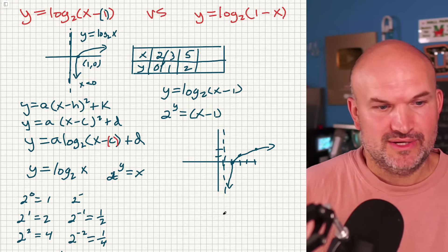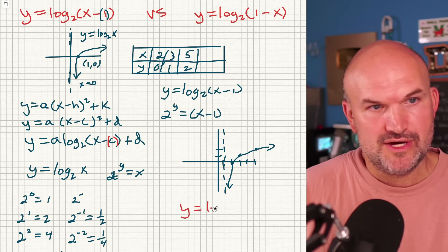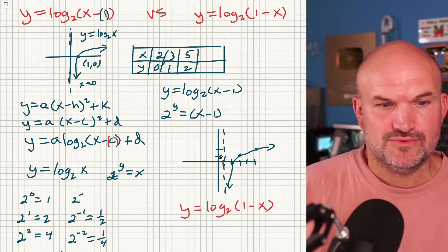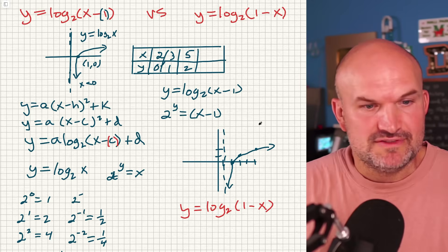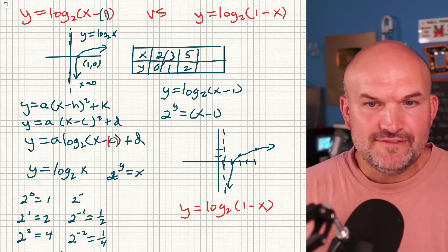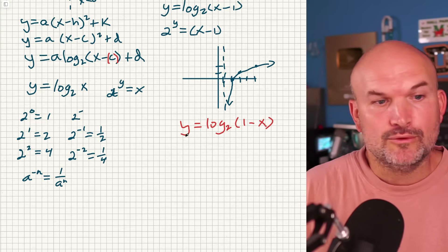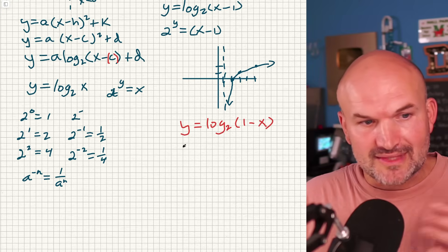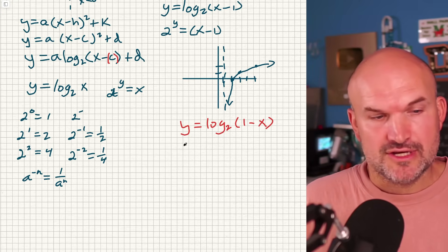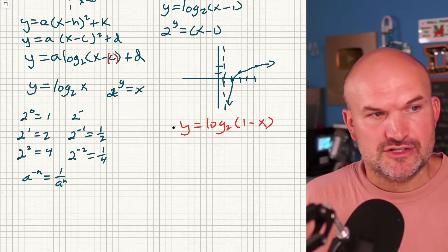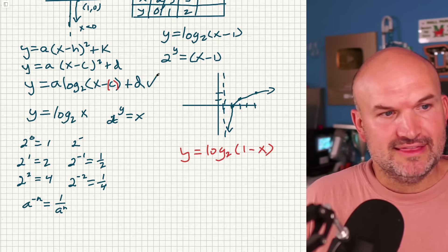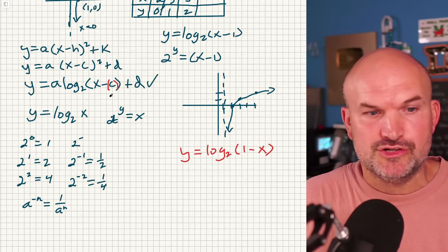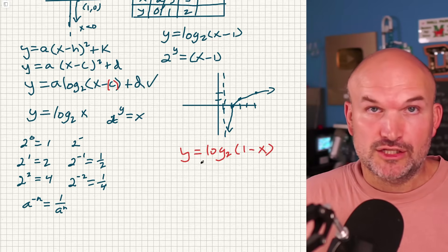Now let's take a look at the second function, log base 2 of (1 minus x). They look very similar — x minus 1 and 1 minus x — but the difference is actually pretty substantial. The reason is that we actually have a new letter to add into our transformations, and that is going to be our value b.